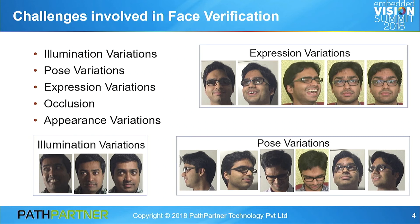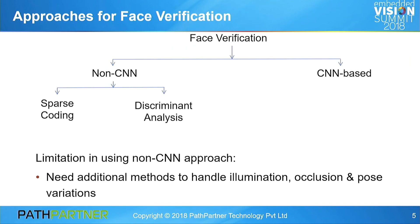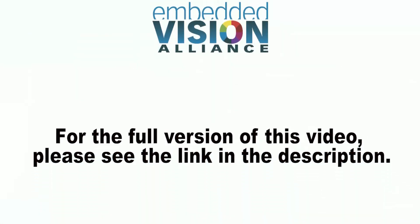To handle these challenges, there are two main approaches: non-CNN based techniques or CNN based approaches. In non-CNN based approaches, sparse coding and discriminant analysis based techniques are typically used. However, to handle the previously listed challenges, additional methods are needed, which brings in computational overhead. Therefore, we recommend using CNN based approaches for the face recognition problem.